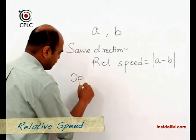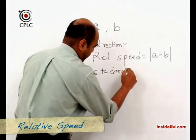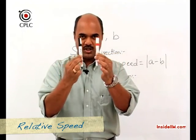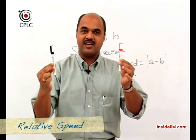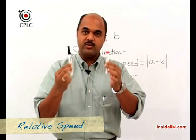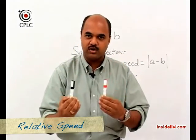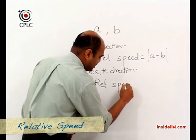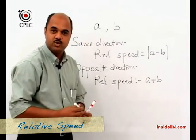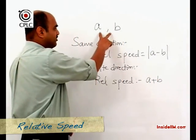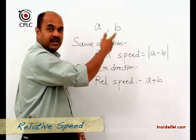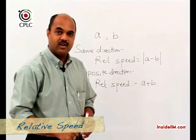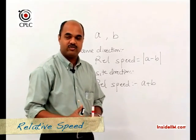However, if two objects move in opposite directions towards each other, each makes it easier for the other to meet, so the time to meet goes down and the relative speed goes up. Hence, when two objects move in opposite directions, the relative speed is the sum of the two speeds. To summarize: same direction → relative speed is the difference; opposite directions → relative speed is the sum.